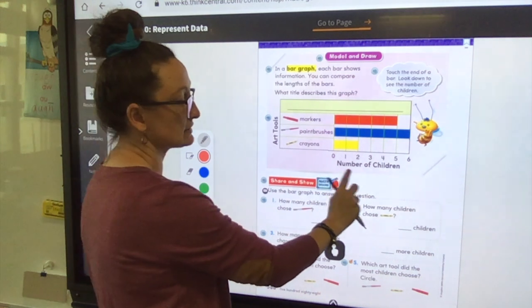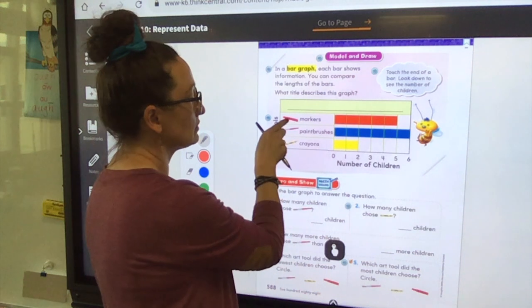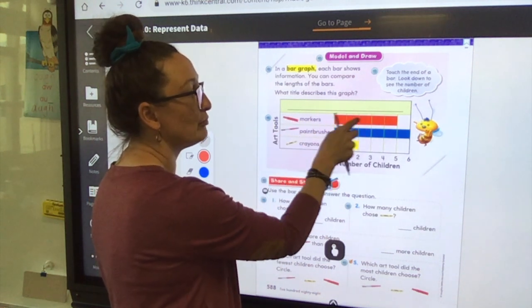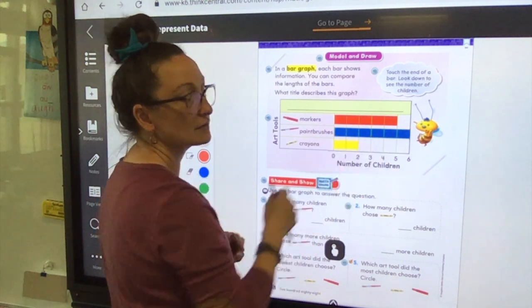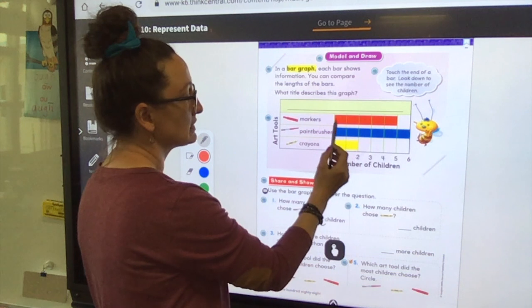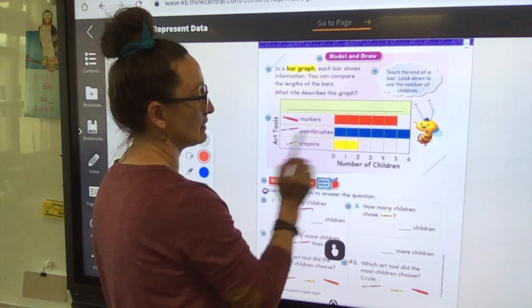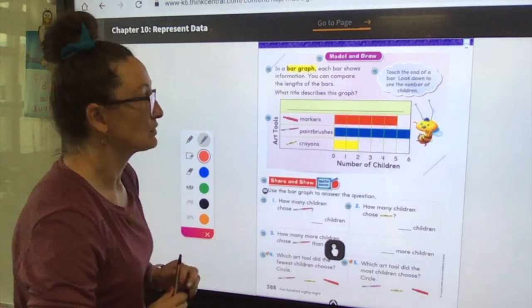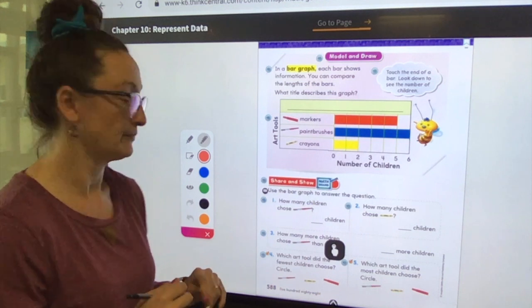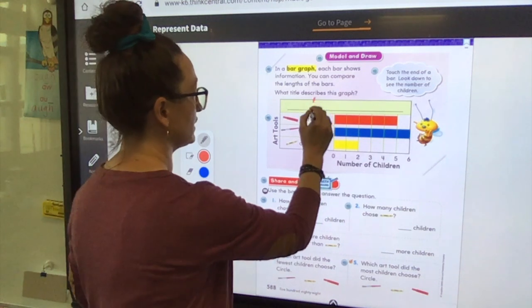Okay, Art Tools. So this is telling us what we're comparing, and then this down here says Number of Children. This tells us how many of each thing we're comparing. Notice that each one of the things has their own color, their own bar of a color. Bar graph, silly. All right, so markers has red, paintbrushes blue, and crayons yellow. Okay, all right. We're going to look and compare. Oh, what should our title be of our bar graph? What do you think? I'm going to go with Art Fun, I don't know. Art Fun.